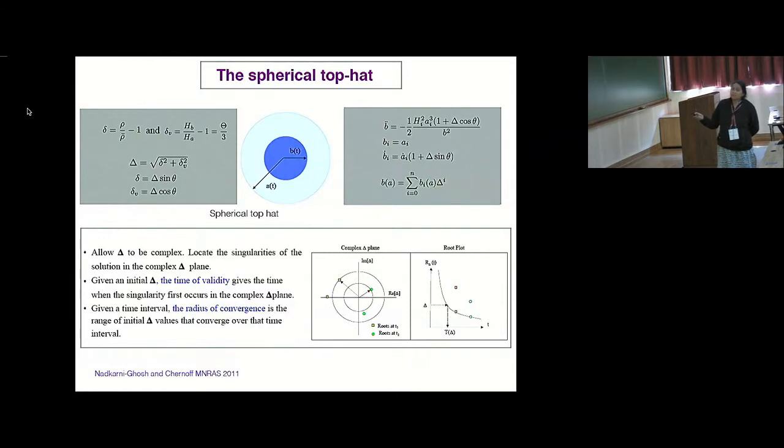And to understand the convergence, what you need to do is you need to treat delta as a complex variable and locate the singularities of this exact solution in the complex delta plane. So given an initial delta, the time of validity is the time a singularity first occurs in this complex delta plane. So here is what we call the root plot. This is the radius of—so conversely, given a time interval, the radius of convergence is the initial range of values that you can use for which the perturbation series is valid. So you can just read off the time of validity given an initial delta and theta.